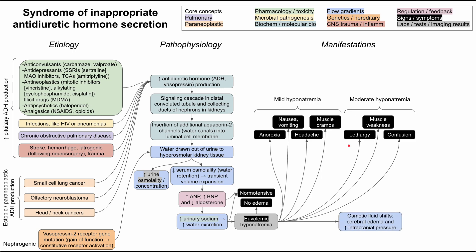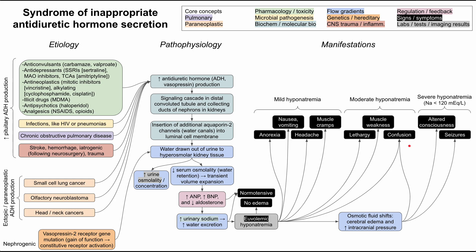In the more serious cases of really bad hyponatremia — down to below 120 milliequivalents — you'll have osmotic fluid shifts. This can result in cerebral edema, brain swelling, and increased intracranial pressure. This can exacerbate the confusion and can lead to altered mental status, altered consciousness, and seizures. This is the severe hyponatremia case, where sodium is less than 120.